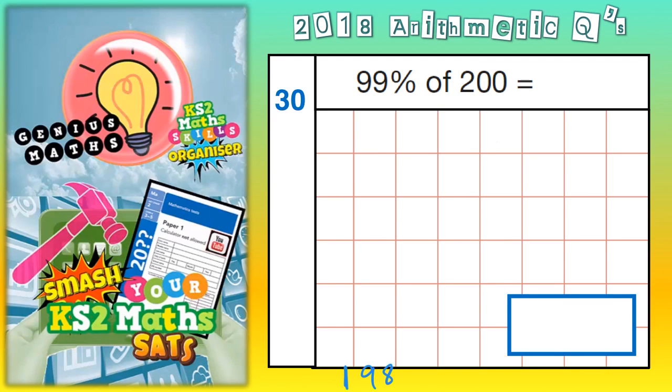So what we could do is find our 10% first. So 10% of 200 is 20. And then we could multiply that by 9, and that would get us up to 90%. So 10% times 9 is 90%, which means you would have to times your 20 by 9 as well. And 9 times 2 is 18, and there's a 0 on the end. So if 9 times 2 is 18, 9 times 20 must be 180.